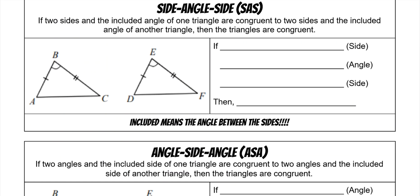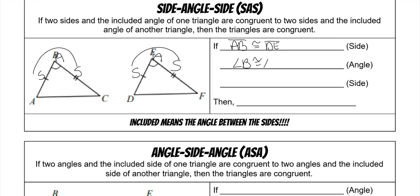Then we have side-angle-side. If you have a side, another side, and the angle between, it reads side-angle-side. The other triangle has to follow the exact same pattern: side-angle-side. Then you have two congruent triangles. So AB would need to be congruent to DE, angle B would need to be congruent to angle E, and BC would need to be congruent to EF. That means triangle ABC is congruent to triangle DEF.